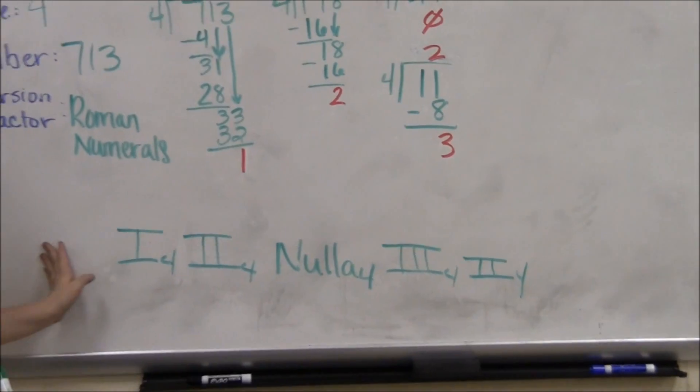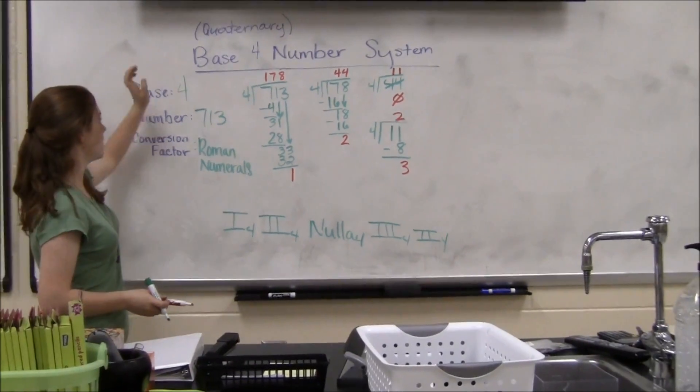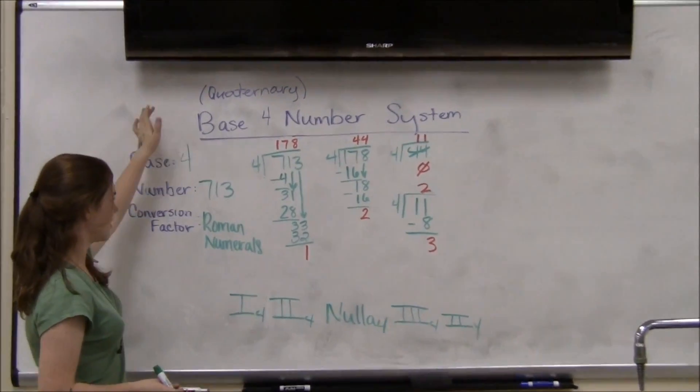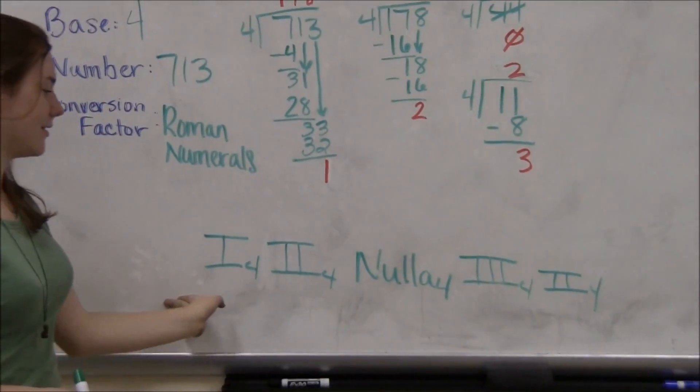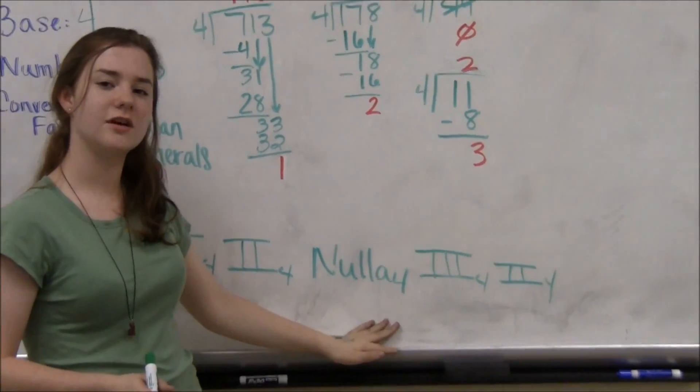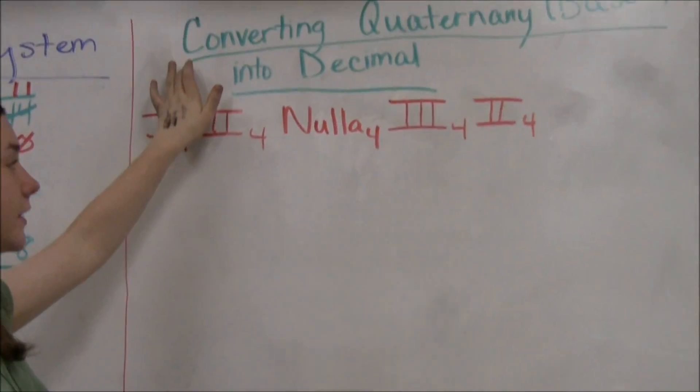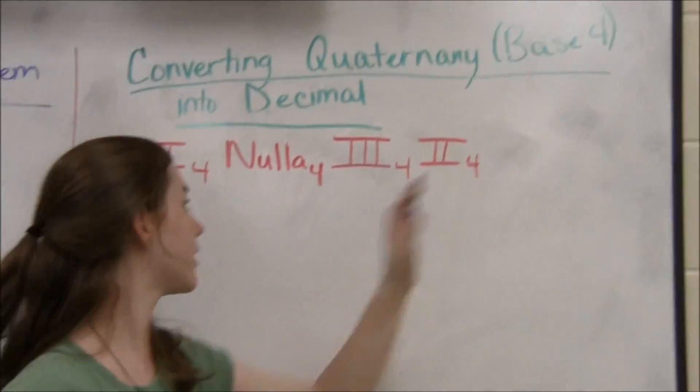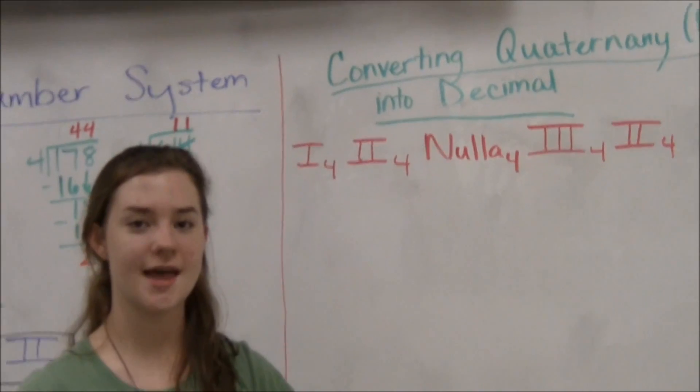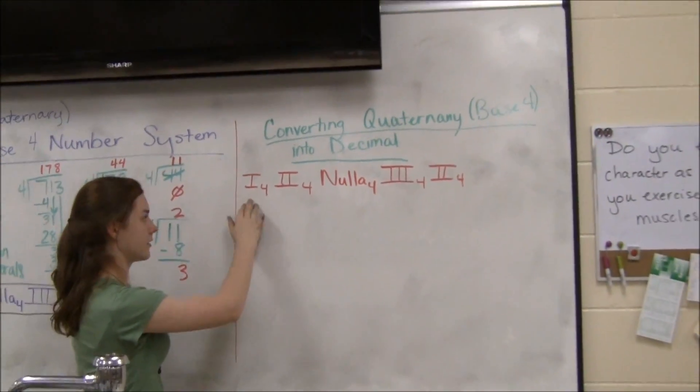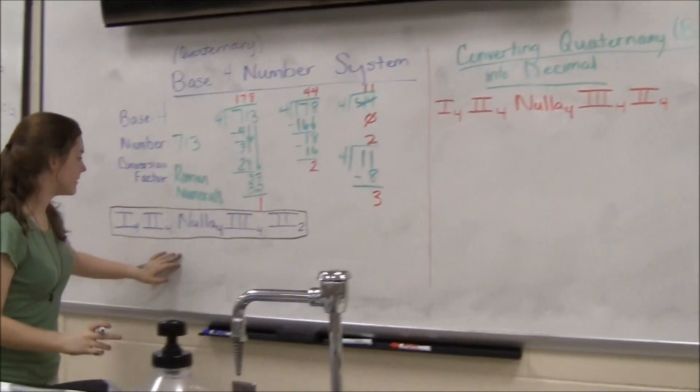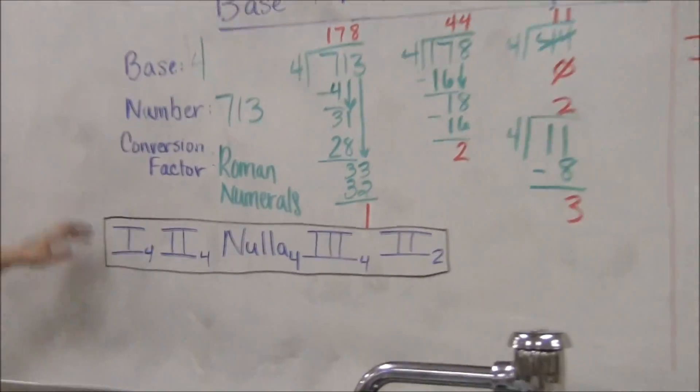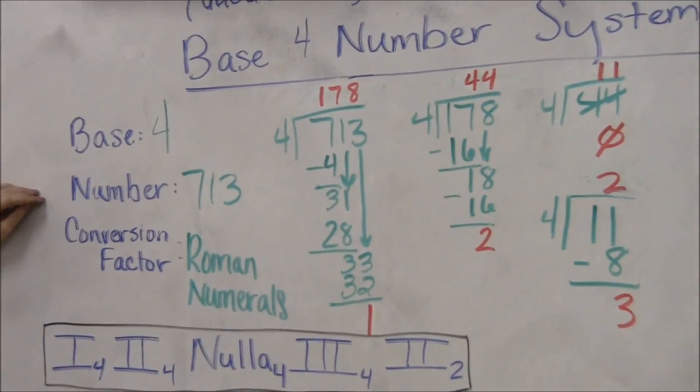And here we have completed our conversion from decimal to quaternary, with a conversion factor of Roman numerals. Now I'll be converting quaternary, base 4, to decimal, also known as base 10. We're starting out with our number in quaternary, which is the same number we used to convert originally from the decimal 713.